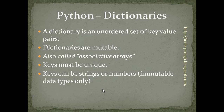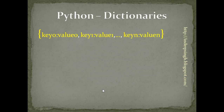Let us look at the format of a dictionary. In Python, a dictionary can be defined as a comma-separated list of key-value pairs within curly braces. We have the first item which is key-0 colon value-0. It has two parts: the first part is the key, then there is a colon, and we have the second part which is the value.